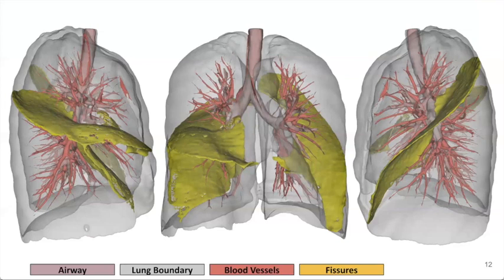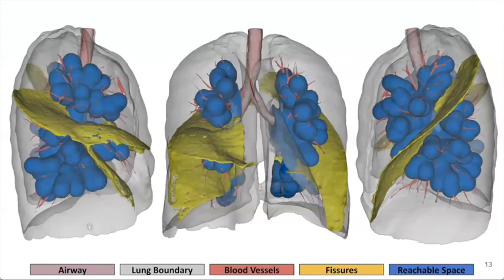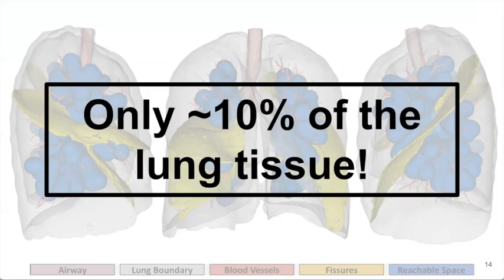So then, if we consider the metric of reachability, how do existing techniques perform? We know that with existing trans-oral approaches, physicians are only able to extend the biopsy needle 10 to 15 millimeters beyond the airway wall, so the reachable space would look something like this, shown here in blue. This represents roughly only 10% of lung tissue.